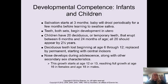Salivation doesn't really start until the baby is about three months old, so when babies drool, parents often think the baby is teething — but that's not really what's going on. Teeth don't generally come in until about six months old, and then the child will consistently gain teeth until about two and a half years old. At around five to six years old, they will start losing teeth, with 12 teeth being replaced by permanent teeth.